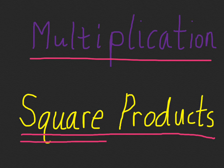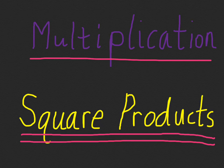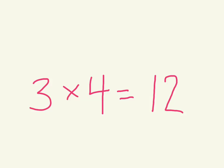So the first thing we need to do is learn a little bit of math vocabulary, and we're going to learn what we call the numbers in the multiplication problem. So here we have 3 times 4 equals 12.